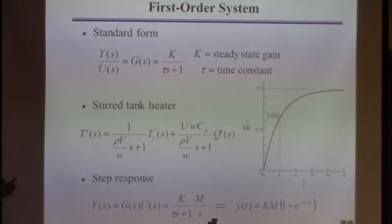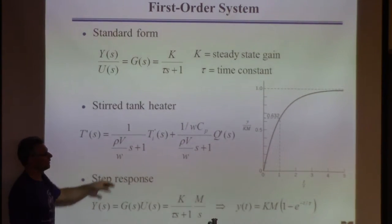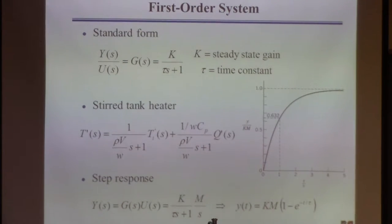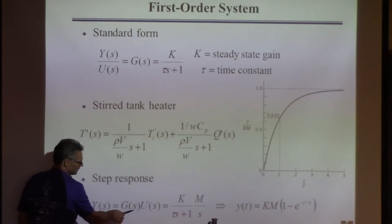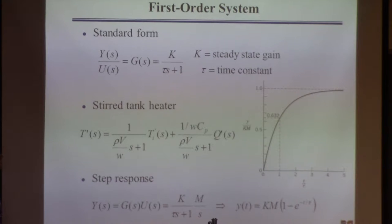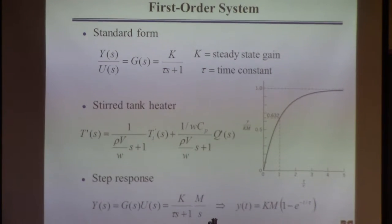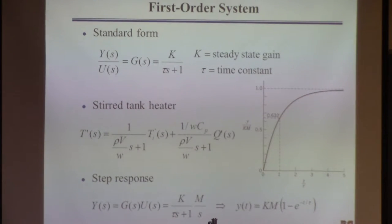To compute the response: write Y equals G times U. G is first-order: K over (tau s + 1). For a step response, U of s is M over s. To find the response I need to take the inverse Laplace transform. It's directly in the table — Table 3.1 has an entry for 1 over s(tau s + 1), whose inverse Laplace transform is 1 minus e to the minus t over tau.